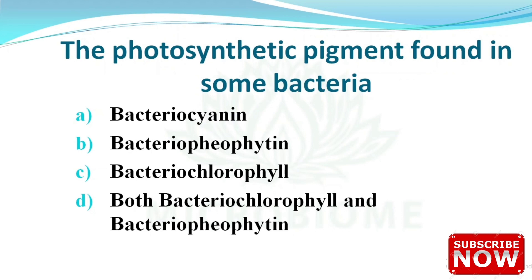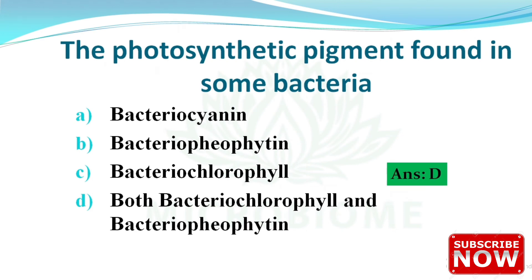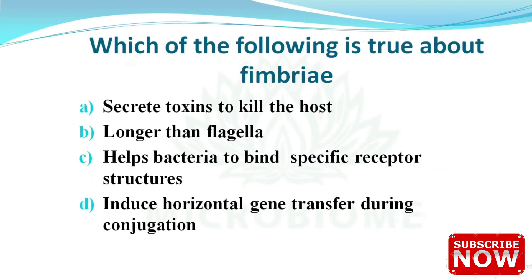Next: the photosynthetic pigments found in some bacteria are which of the following? The options are bacteriocyanin, bacteriopheophytin, bacteriochlorophyll, both bacteriochlorophyll and bacteriopheophytin, and bacteriopheophytin alone.